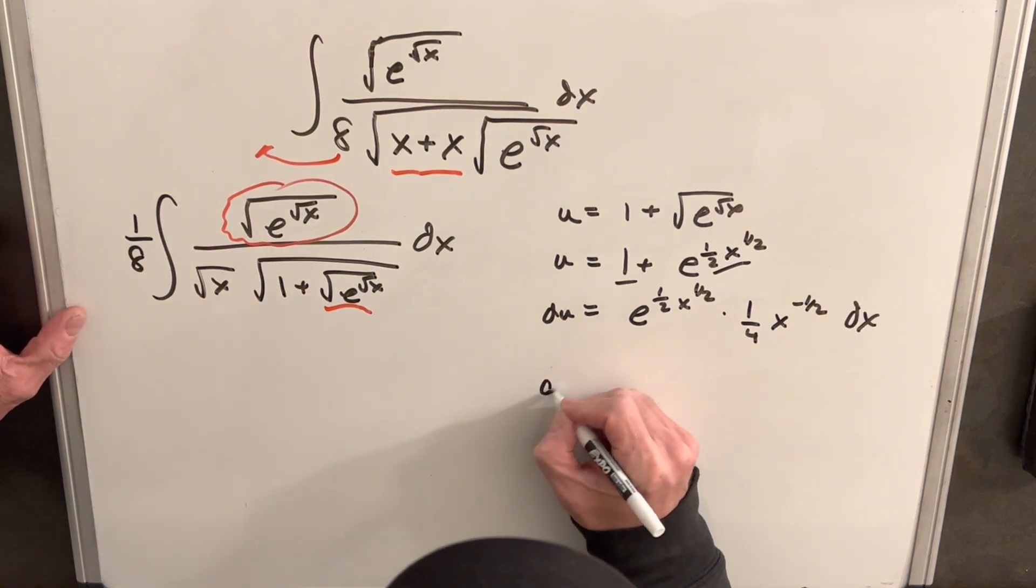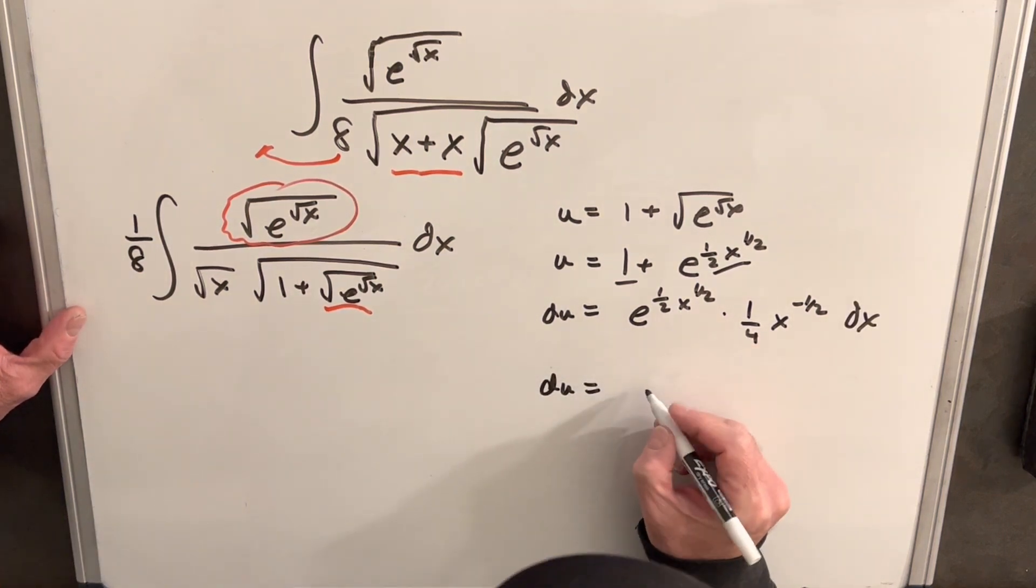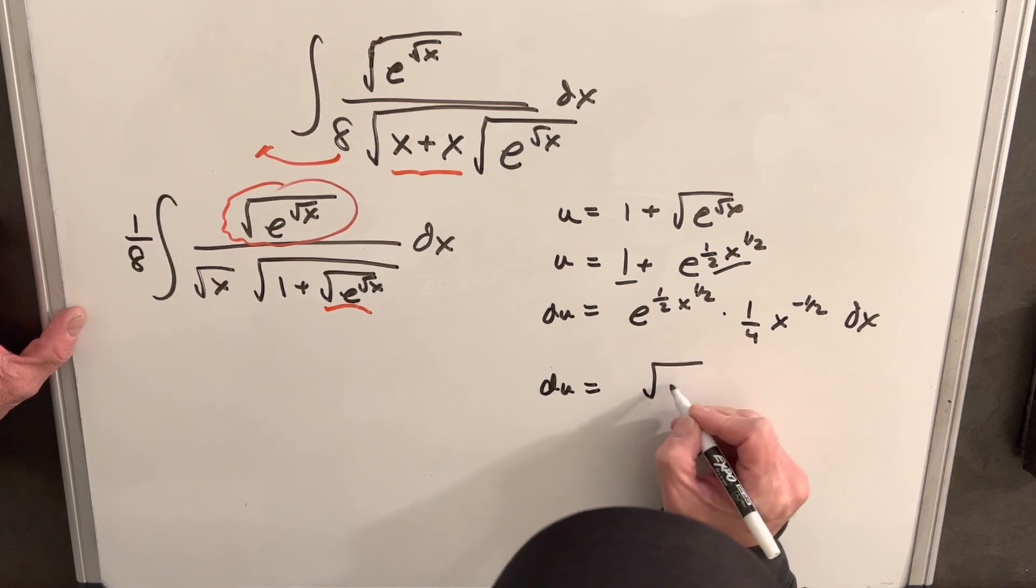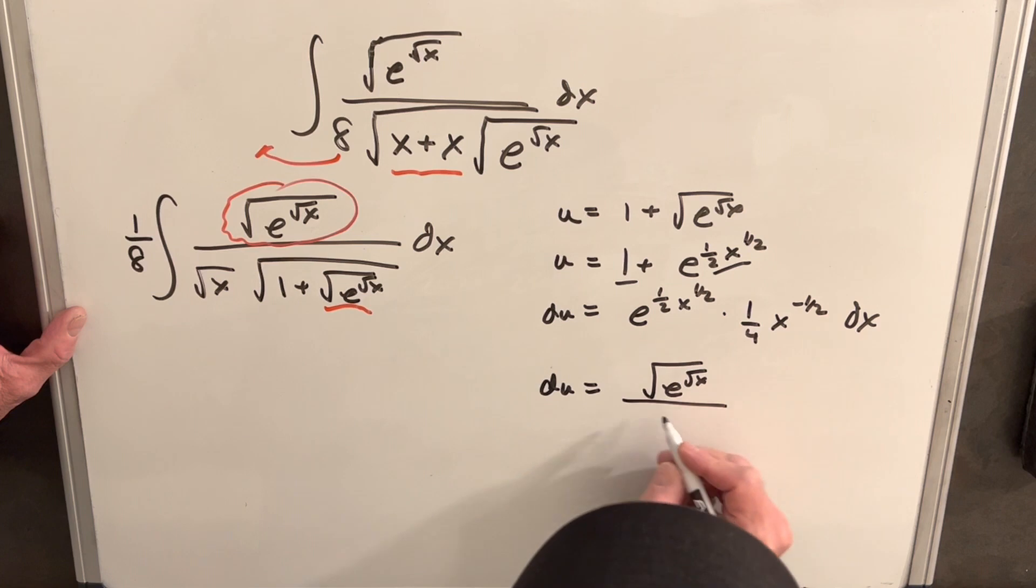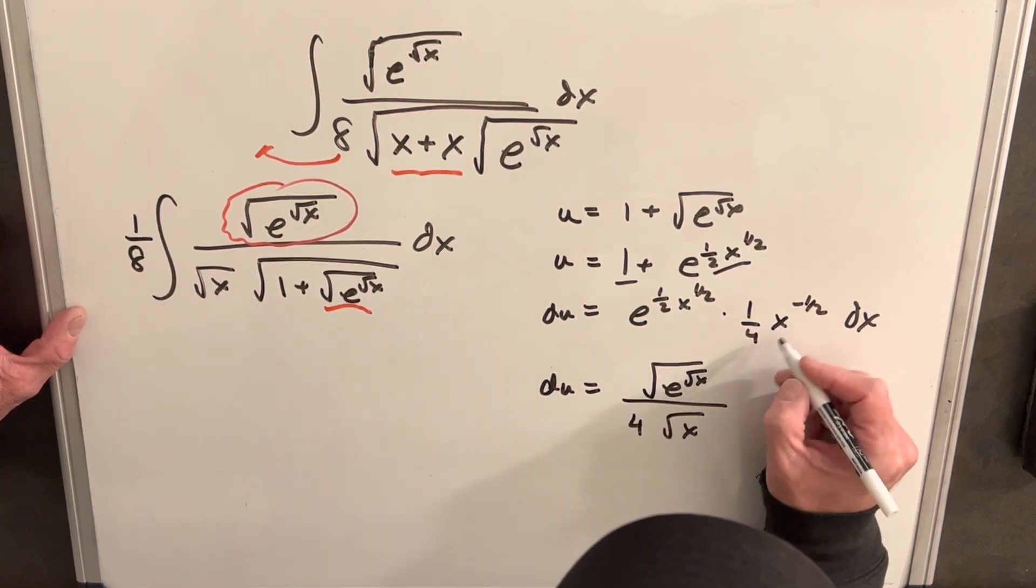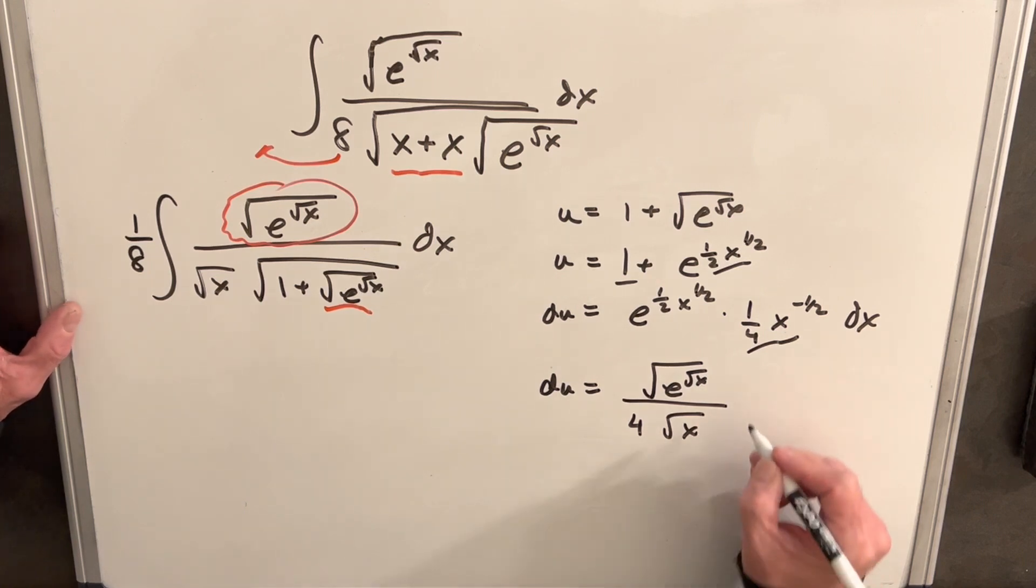And then let's just clean this up a little bit. So I'm going to actually put this back the way we had it. So we're going to have this as e, square root of x. And then this is all going to be over a fourth square root of x. This is just a square root of x in the denominator, dx.